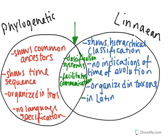In contrast, for phylogenetic classification, there is no language specification. You can use the trees that are used to depict phylogenetic classifications and fill them in with pictures, or you can use the Latin names as well, or you can use English or whatever other language names. So there's less specification within phylogenetic classification.